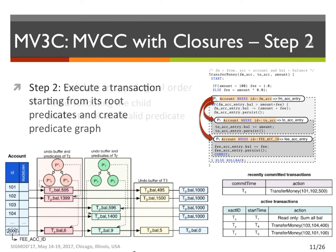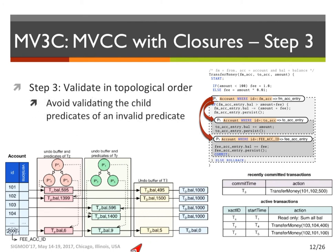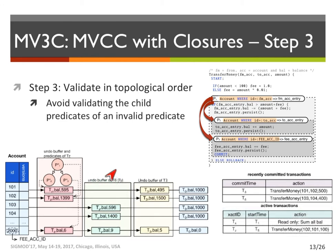After the execution is over, in the third step, validation is done by traversing the predicate graph in topological sort order and checking the validity of each predicate. If a predicate is invalid, none of its child predicates need to be checked for validity. Let's assume TY reaches validation first, and because there was no other transaction committed during its execution time, it succeeds. Then, TZ reaches validation, and while checking the validity of predicate P3, it finds a match with a version written by TY for the fee account. Therefore, it is marked as invalid, and TZ fails validation.